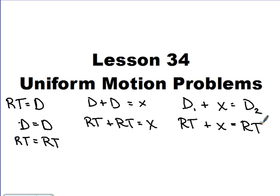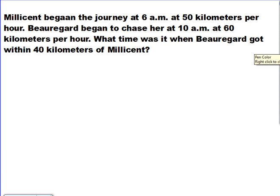Let's look at an example. Millicent began her journey at 6 a.m. at 50 kilometers per hour. Beauregard began to chase her at 10 a.m. at 60 kilometers per hour. What time was it when Beauregard got within 40 kilometers of Millicent? The key to solving these problems is to sketch it out and make a picture of what you're trying to solve for.